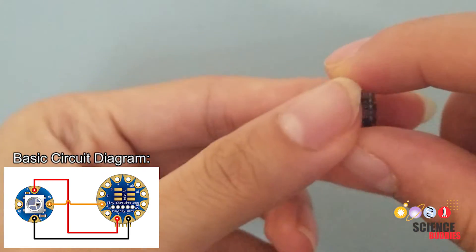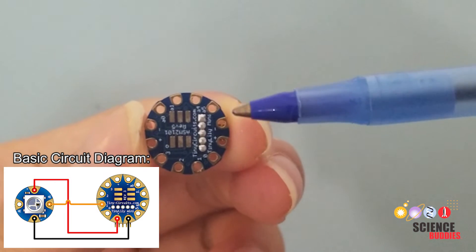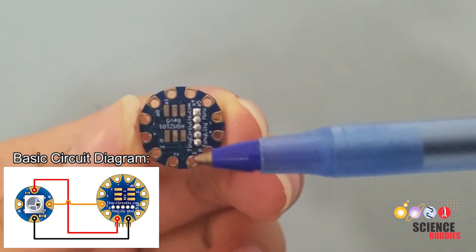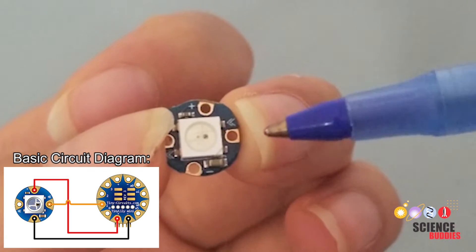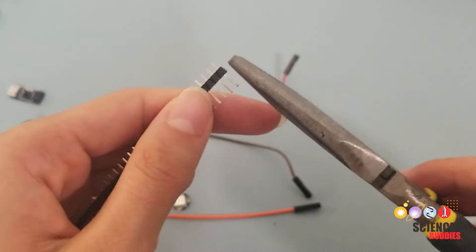The negative pin to the minus pin, and the pin one on the TinyLily should go to the arrow pointing into the LED board, also known as the input pin, on the RGB LED.